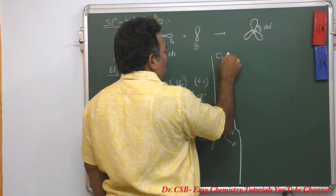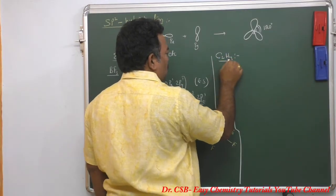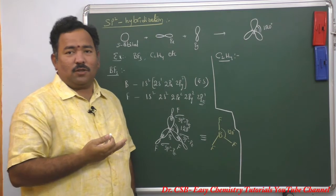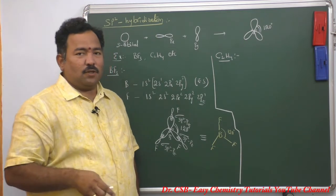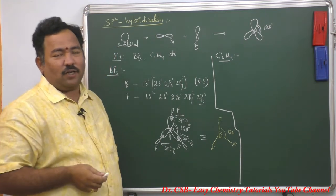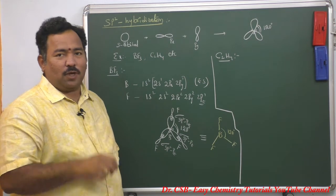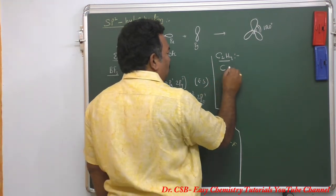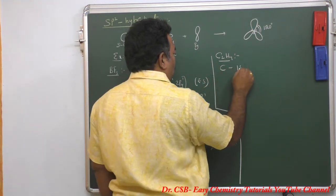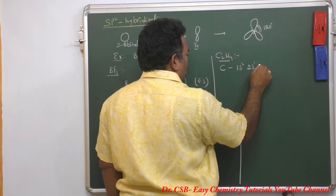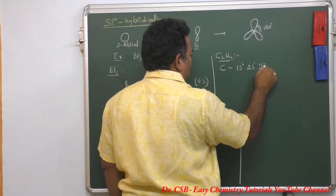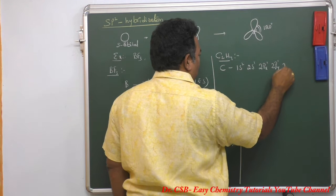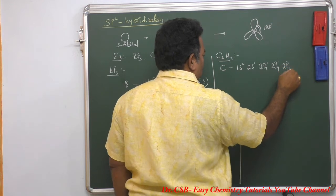Let me take the other example, C2H4. In this molecule there are two carbon atoms. The electronic configuration of each carbon in its excited state is 1s2, 2s1, 2px1, 2py1, and 2pz1.